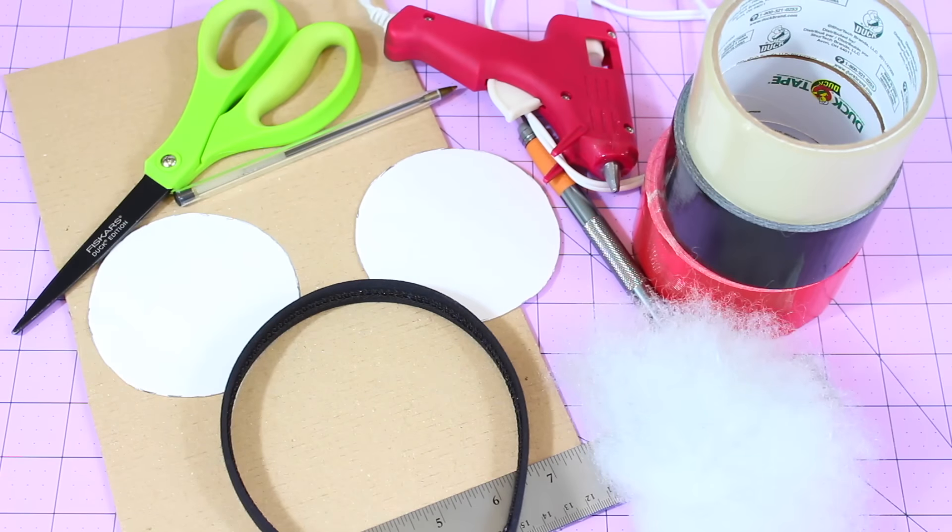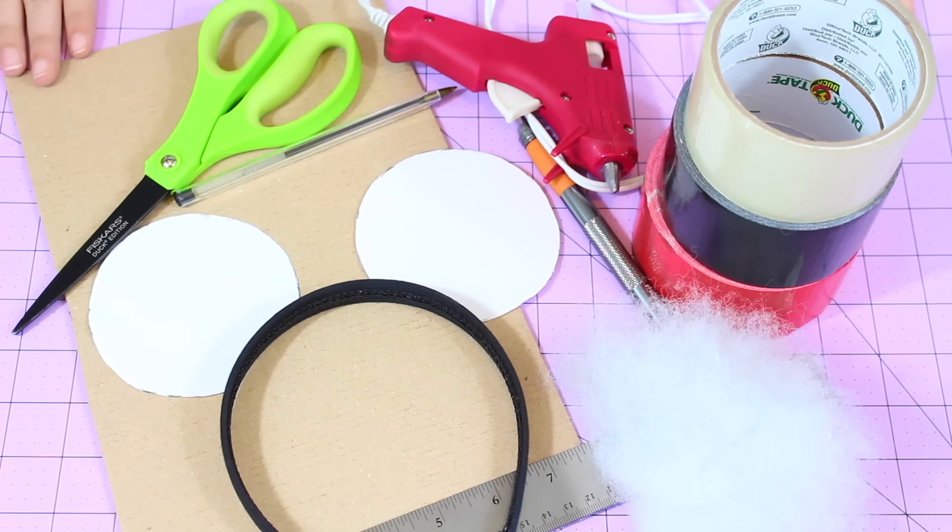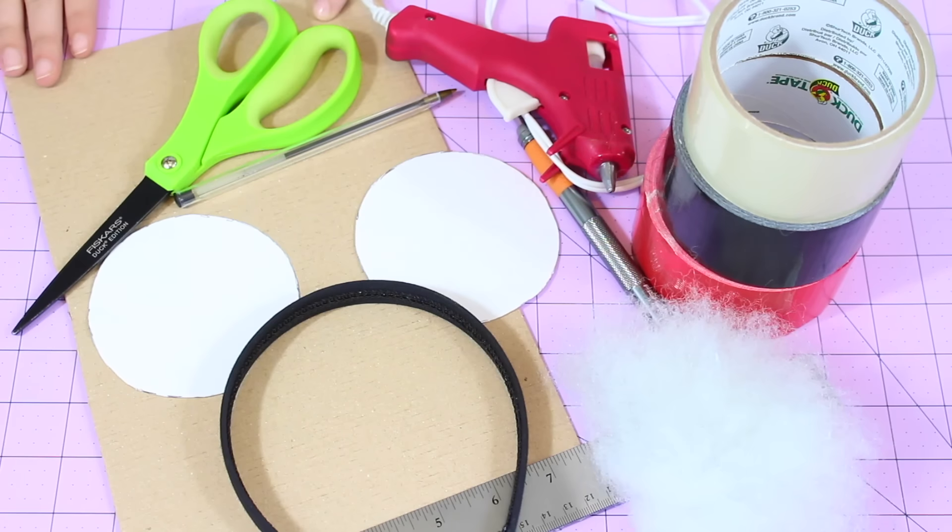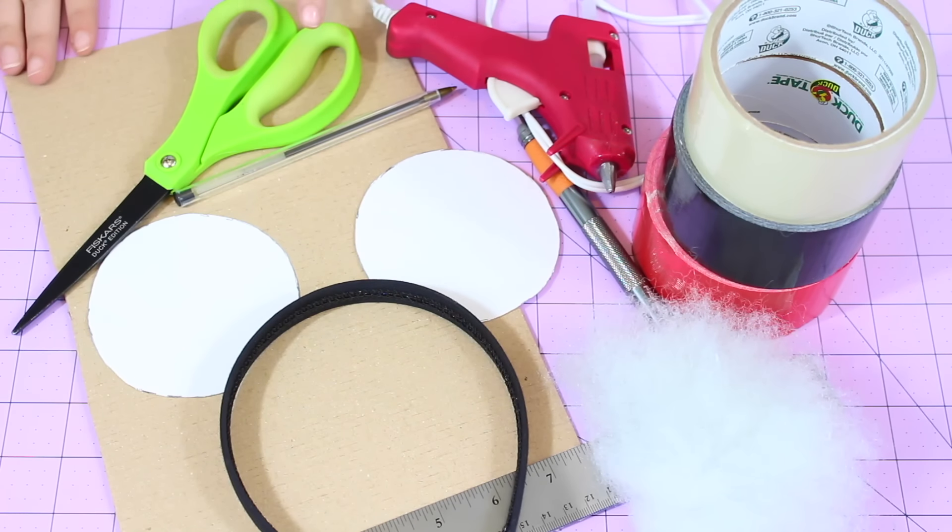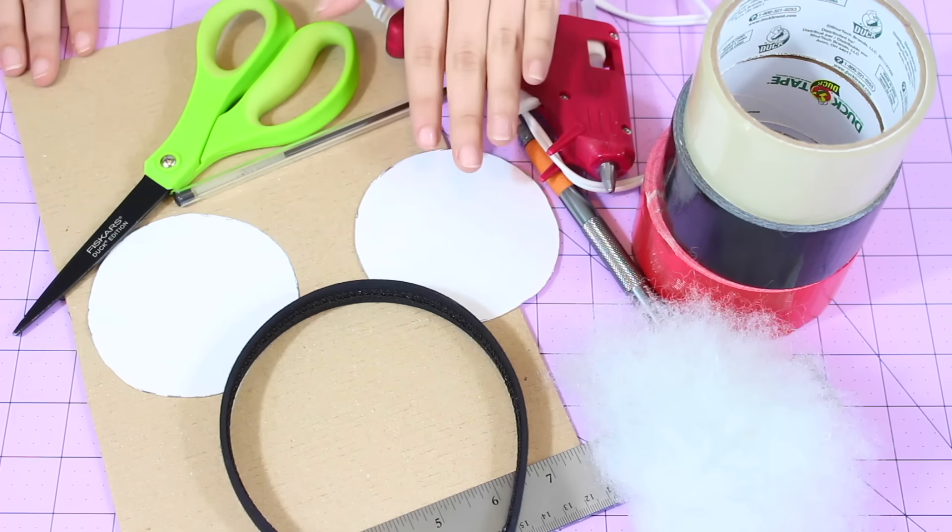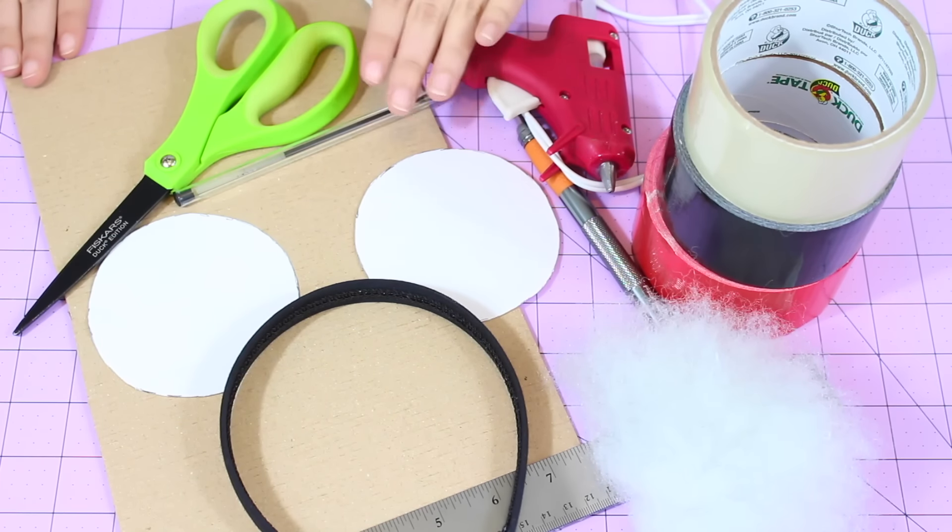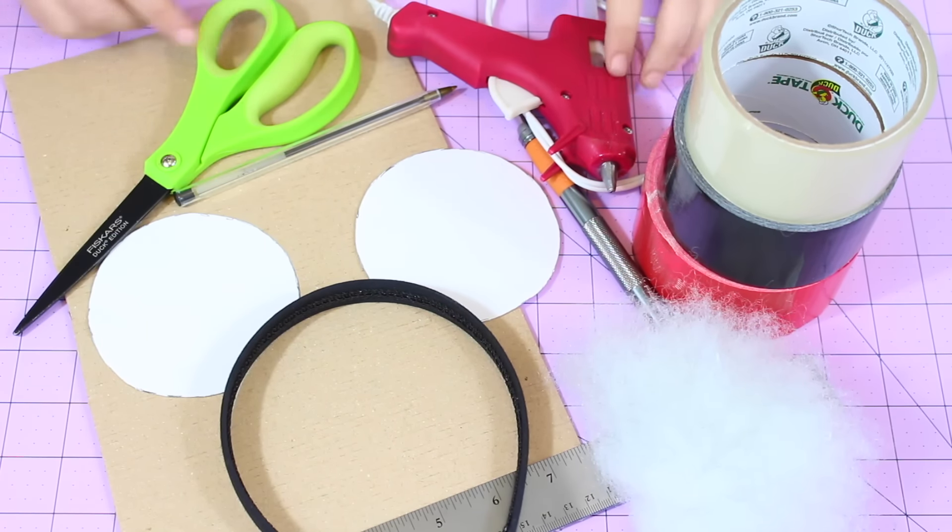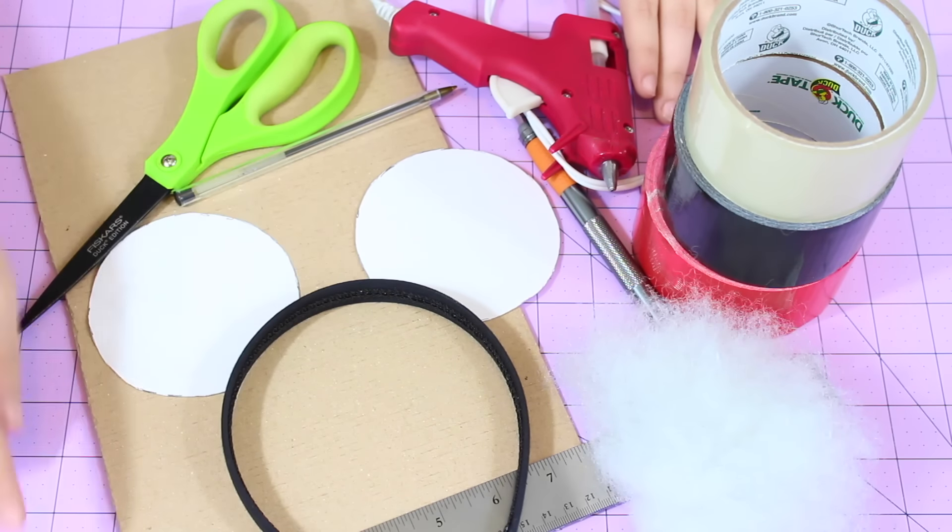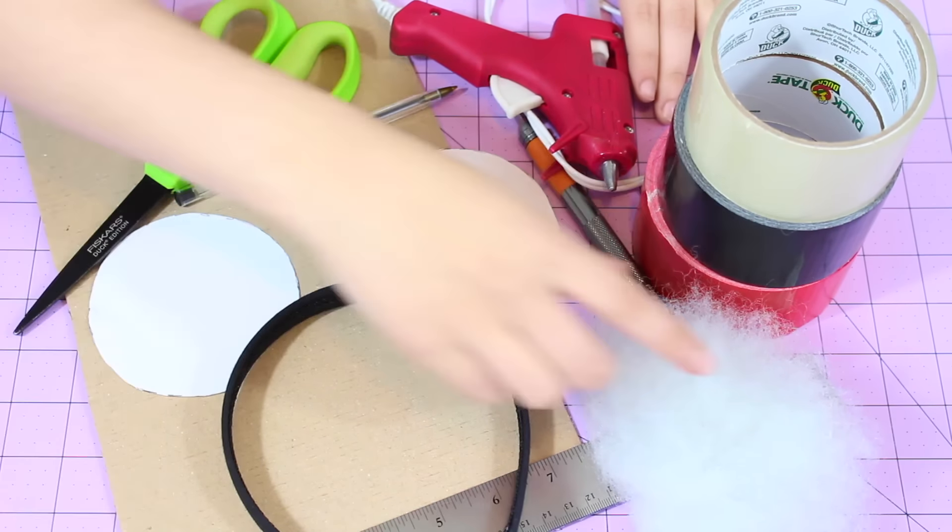So to make your Minnie Mouse ears you're going to need a cutting surface, a hot glue gun, a piece of cardboard, a pin, some non-stick scissors these are optional but they are helpful, an exacto knife, your Minnie Mouse ear templates which I will link in the description down below where you can find those, you're going to need a thicker headband, a ruler, some cotton filler, two colors of duct tape, one for your Minnie Mouse ears and one for your bow and some clear tape.